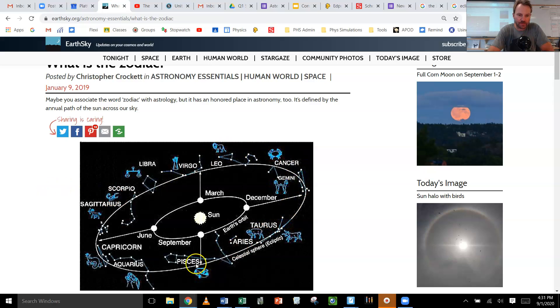Where is Capricorn? There it is, Capricorn. Aquarius, Pisces, Aries, Taurus, Gemini, Cancer, Leo, Virgo, Libra, Scorpio, Sagittarius.